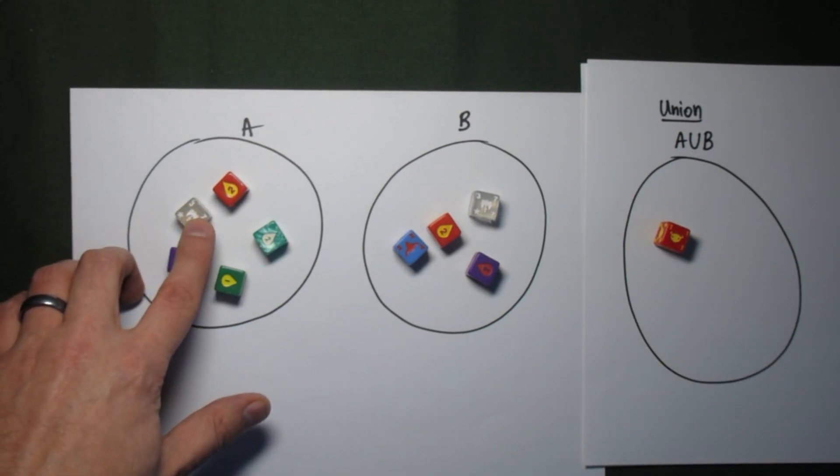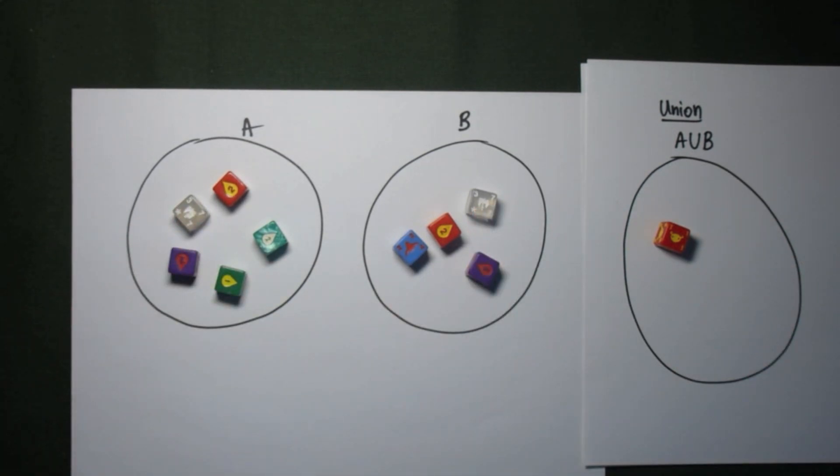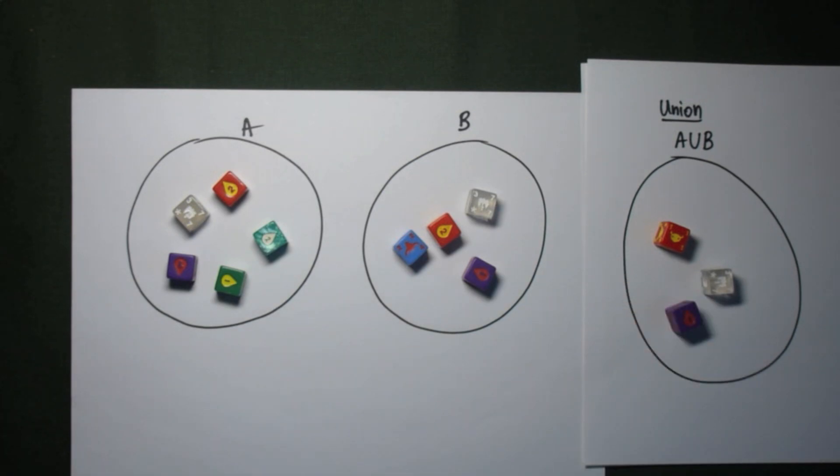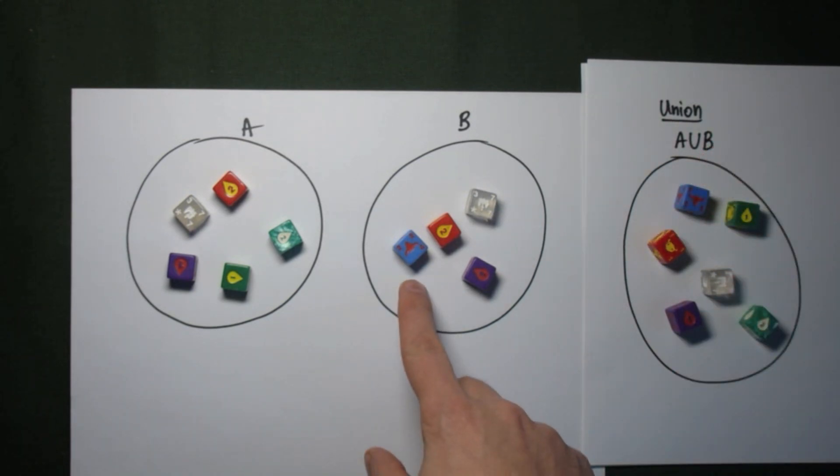Starting with the red die, the red die is in both sets, so it's in the union. The clear die is in both sets, so it's in the union. The purple die is in both sets, so it's in the union. The green die is in A, but it's not in B. But that doesn't matter. As long as it's in one, it's in the union. So we get a green die in the union. We also get a marble die in the union, even though it's only in A. And we get a blue die in the union, because it's in B.